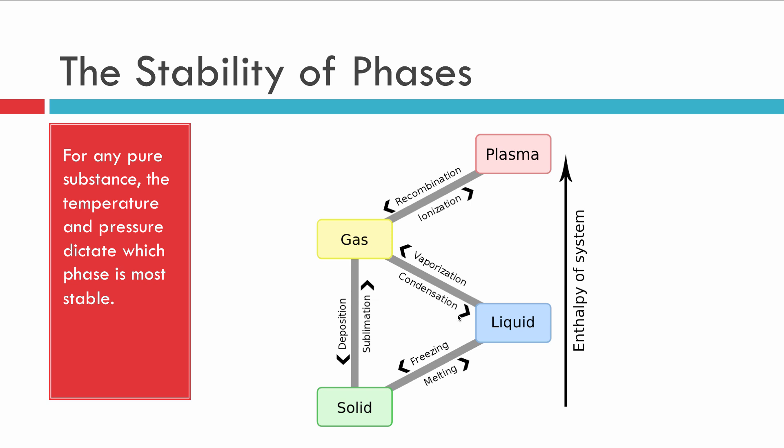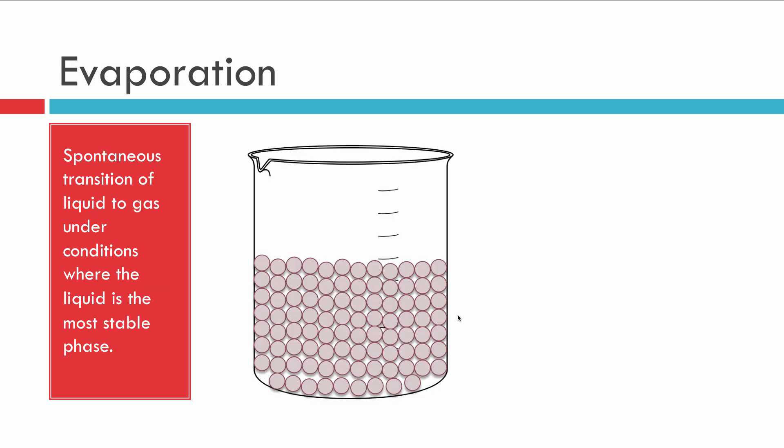The same thing goes with solid water — we know that's going to be ice if it's below zero degrees and one atmosphere. What happens if we change the pressure or the temperature? Those changes are going to determine whether or not a particular phase is more stable than another. What we're going to look at today is what is going on when there's a spontaneous transition from the liquid to the gas phase even when the liquid is supposed to be the most stable. Why does this happen?